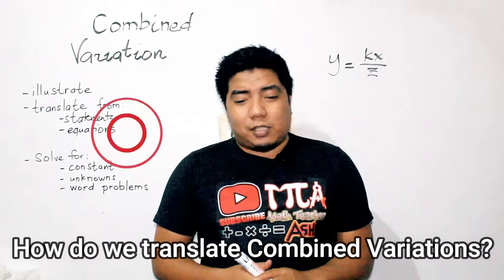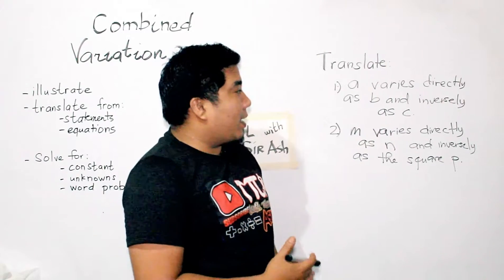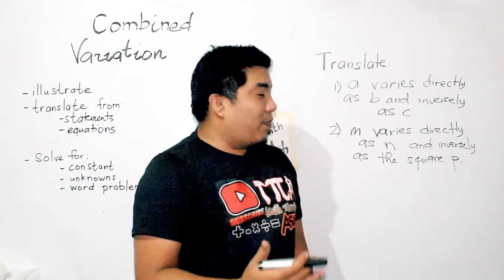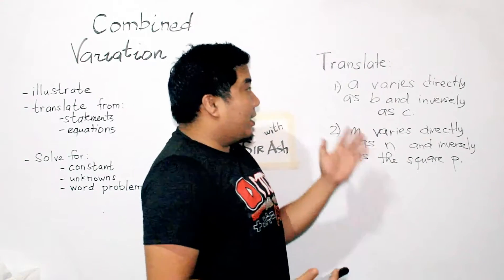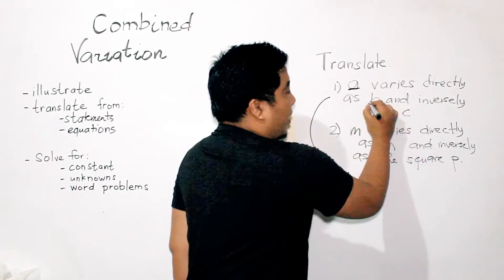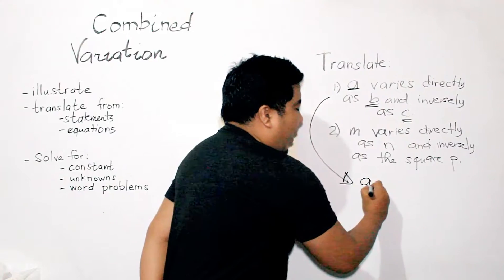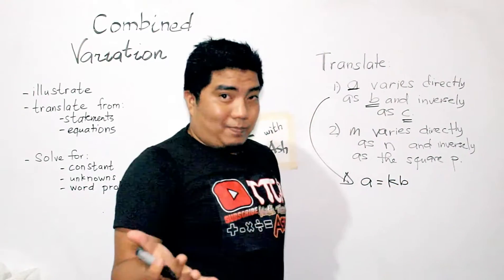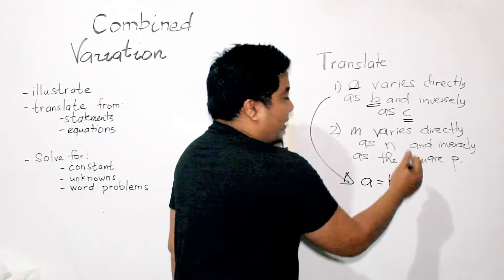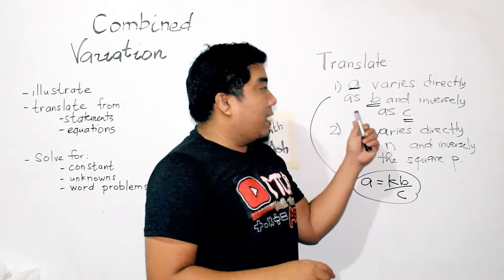How do we translate combined variations? We have the first exercises. Translate: A varies directly as B and inversely as C. Since A varies directly as B, we could write A is equal to KB. Then, inversely as C — we just make it over and put C, giving us A = KB over C. That is our translation for the first statement.